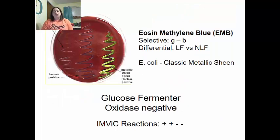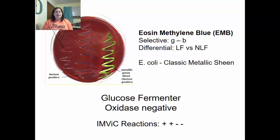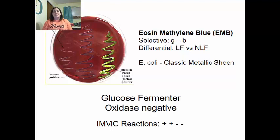EMB agar can be used for E. coli — it selects for gram-negative bacteria and is differential for lactose versus non-lactose fermenters. E. coli has a classic metallic sheen on EMB. It is a glucose fermenter and oxidase negative. The IMViC reactions for E. coli are: indole positive (red on top), methyl red positive (red), VP negative (no color change), and citrate negative (stays green, does not turn blue). These tests help identify E. coli from other gram-negative bacteria. EMB is particularly useful for fecal coliforms from stool samples.